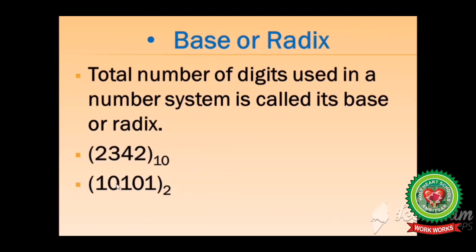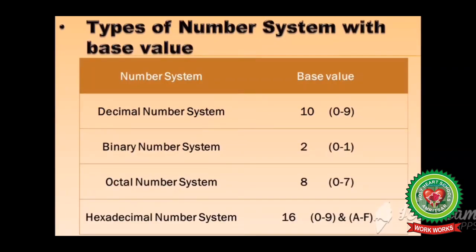This is the binary value 10101 and its base value is 2. Now let's discuss types of number systems with their base values. Decimal number system has 10 base value, that is from 0 till 9. Binary number system has 2 base values, 0 and 1. Octal number system has 8 base values, 0 till 7. And hexadecimal number system has 16 base values, that is from 0 till 9 and alphabets A till F. These are capital alphabets and they contain values 10 till 15 in decimal form.